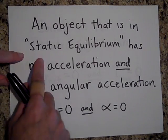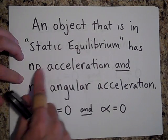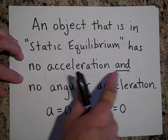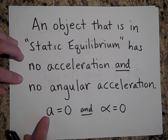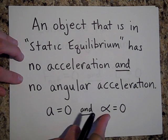So an object that is in static equilibrium has no acceleration and no angular acceleration. A equals zero and alpha equals zero.